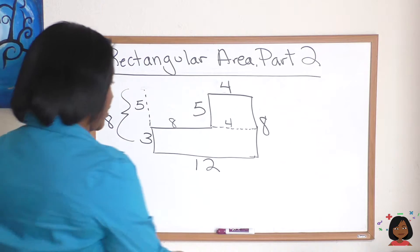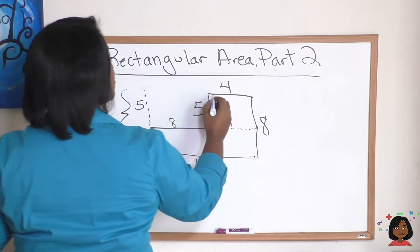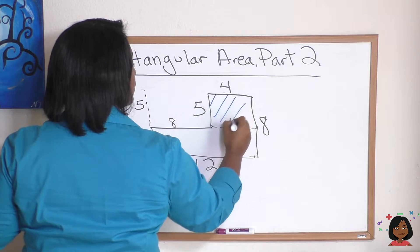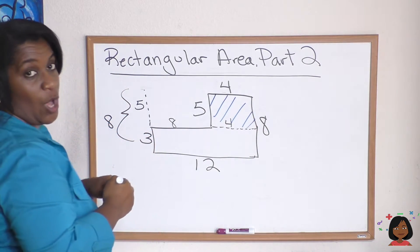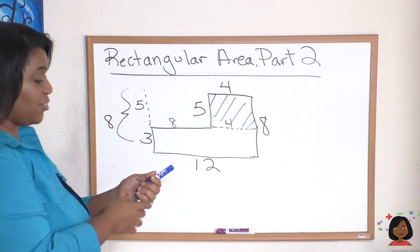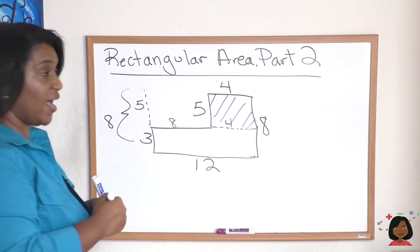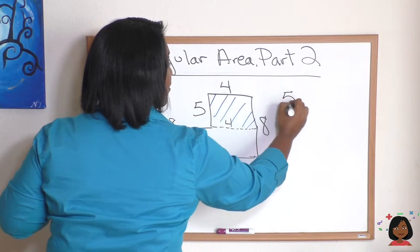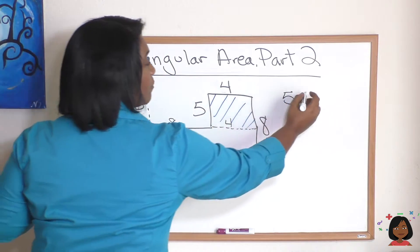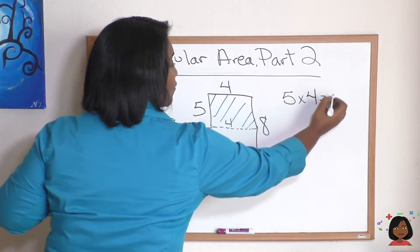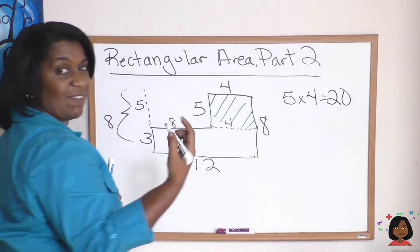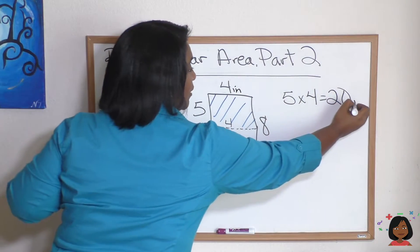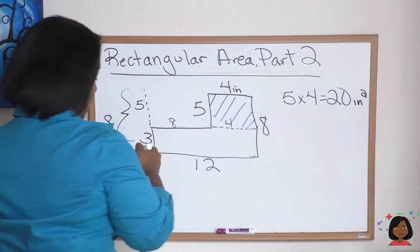Let me use a different color marker to show you here. I'm gonna use blue for my first one. Well, again, we know length times width. So the length of this is five and the width is four. Five times four is 20. And I'm gonna give it a label of inches. So we know it's going to be inches squared for the first one.